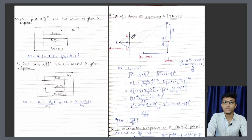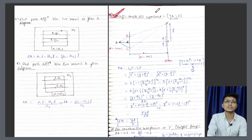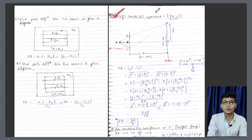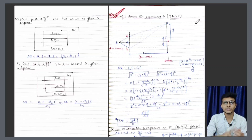Aise karke hum ek naya question karte hain. Agar kisi saal nahi diya, to shayad examiner ne wo question dalne mein bhool ki hogi — itna frequent question is topic se poochha jata hai. Yeh chapter mein YDSE — Young's Double Slit Experiment — ya phir diffraction, in dono cheezon se yahan par questions pooche jaate hain.